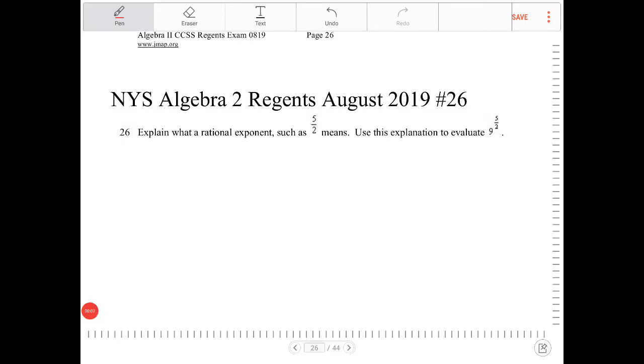Explain what a rational exponent such as 5 halves means. Use this explanation to evaluate 9 to the 5 halves.